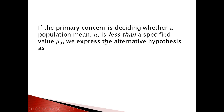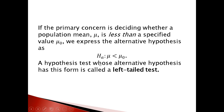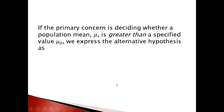The second situation is if our focus is deciding whether a population mean is less than a specified value μ₀. We express this alternative hypothesis using the less-than symbol: Hₐ such that μ < μ₀. Since we use the less-than sign, we call that a left-tail test.